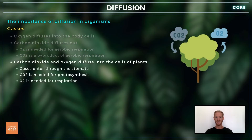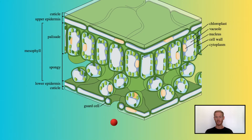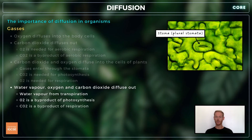Photosynthetic plants need carbon dioxide to produce glucose from sunlight. This diffuses through the many stomata in the leaves, into the airspaces in the mesophyll, and then into the palisade cells, which are densely packed with chloroplasts. Any oxygen needed for respiration and carbon dioxide produced as a by-product also diffuse through the stomata of the leaves.